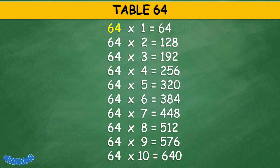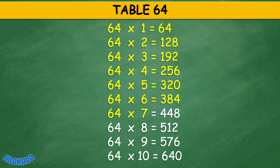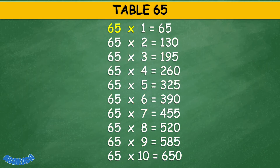Table 64: 64 times 1 equals 64, 64 times 2 equals 128, 64 times 5 equals 320, 64 times 6 equals 384, 64 times 7 equals 448, 64 times 8 equals 512, 64 times 9 equals 576, 64 times 10 equals 640.